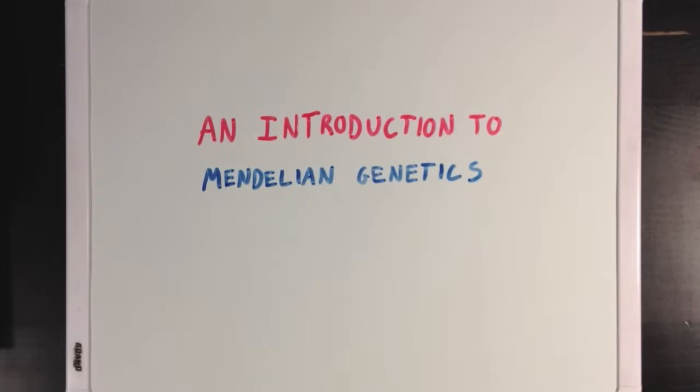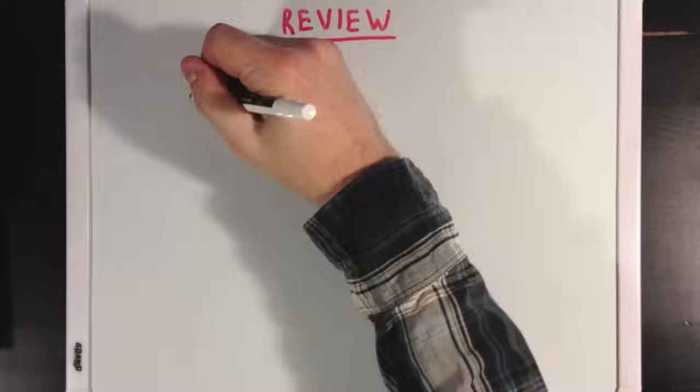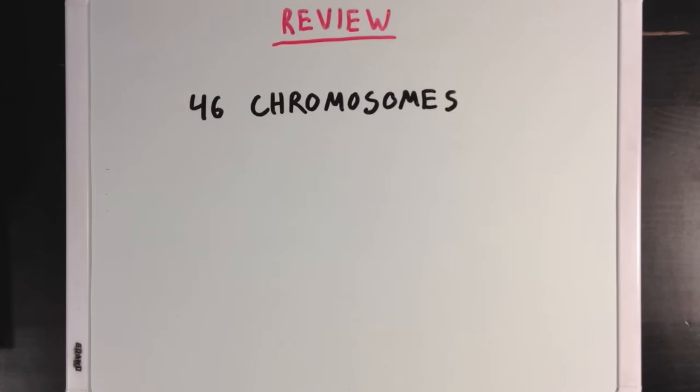An introduction to Mendelian genetics. Now before we start, let's review the idea that human cells contain 46 chromosomes, which contain the DNA that makes each cell unique.